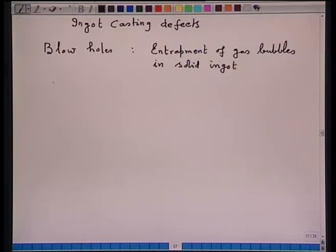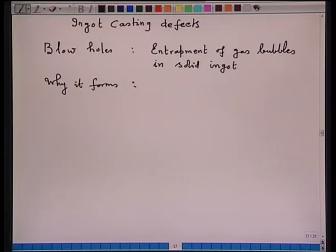Blow holes form in semi-killed and rimming steel because the deoxidation is not complete. In rimming steel, no deoxidation is done. In semi-killed steel, the steel is only partially deoxidized.